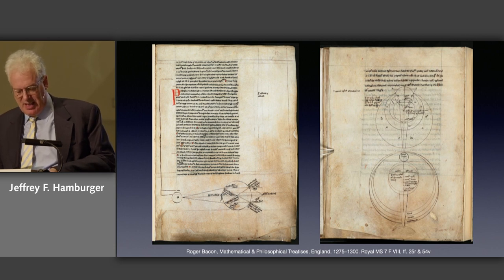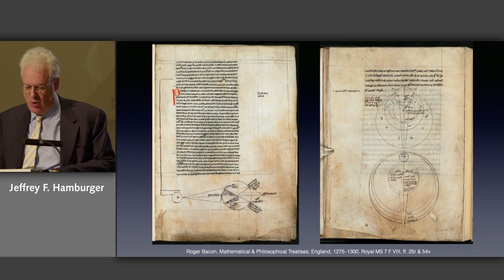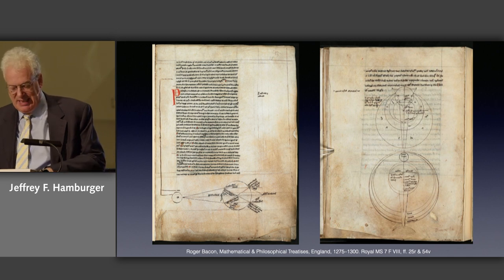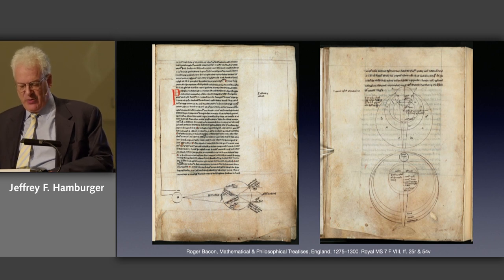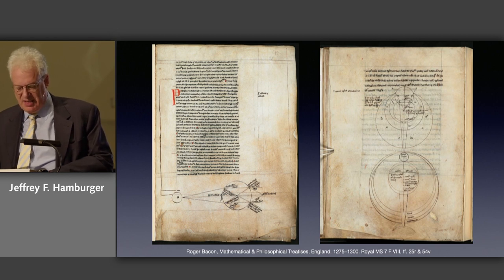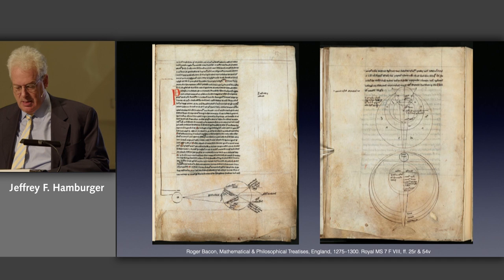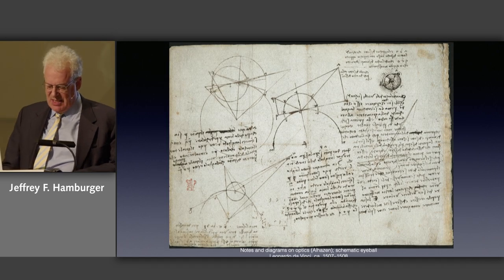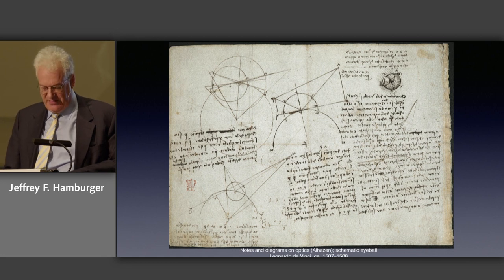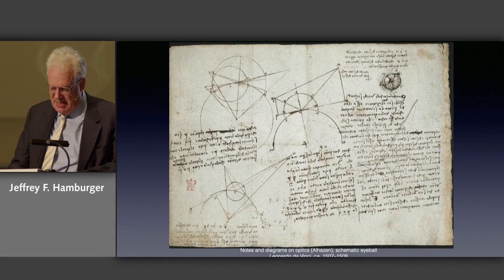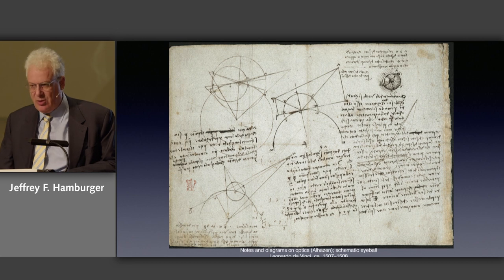Bacon championed the empirical study of nature, especially optics, albeit always within a Christian metaphysical framework. Diagrams litter the earliest extant copy of several of his works, written during the last quarter of the 13th century, most likely at Oxford, where Bacon taught when he wasn't in Paris. The diagram's demonstrative function makes them integral to the text. Looking at this manuscript, one inevitably thinks of another great student of the subject, Leonardo da Vinci, whose Arundel Codex includes optical diagrams. The resemblance, however, is rather deceptive. Despite Bacon's appeals to experience, what his diagrams ultimately represent are geometrical thought experiments.